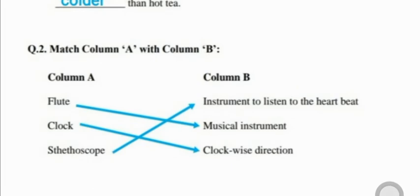Question 2, matching column A with column B. First is flute — yeh ek musical instrument hai, bansuri. Next is clock — clockwise direction mein ghoomta hai. Stethoscope kya hota hai — instrument to listen to the heartbeat. Heartbeat ko sunne wala ek instrument hai — stethoscope.